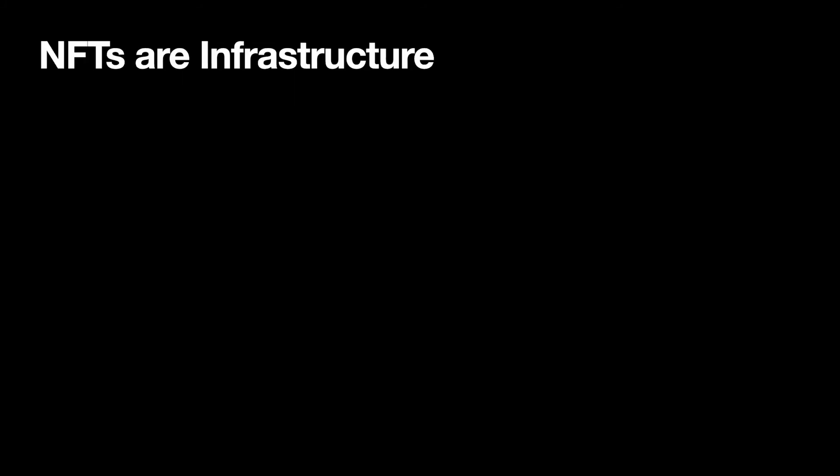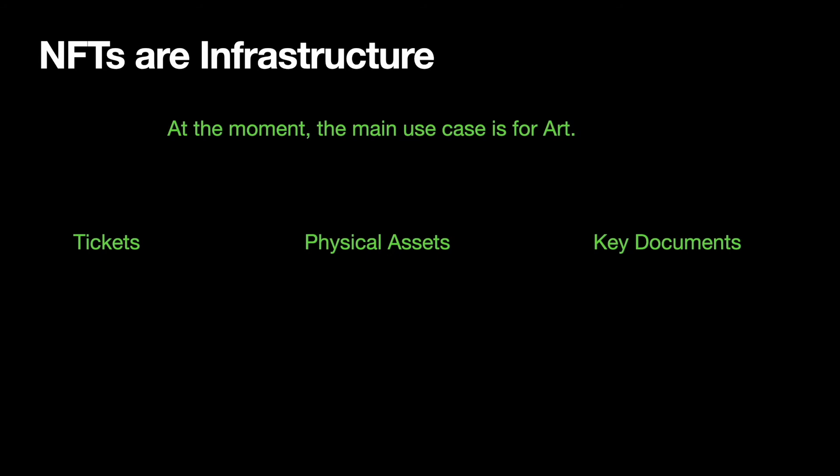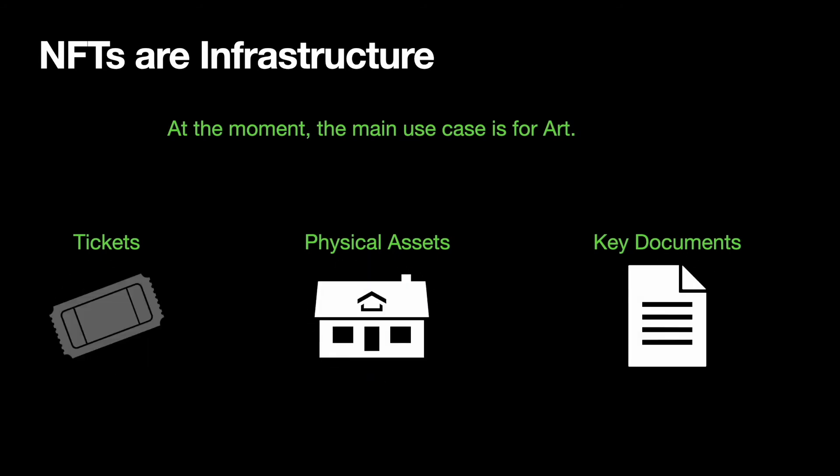At the moment the main use case for these is art, as you've seen, but if we zoom out a little bit, what these are is the base-level infrastructure you need to prove who owns what. That could be tickets in the future, physical assets, your driver's license may eventually become an NFT — anything important that we want to track that's not just money, because that's kind of already been solved by what Bitcoin did originally. Now we've got even more powerful third-generation blockchains like Cardano which enhance that further. So we solved currency — now we're solving every other asset.